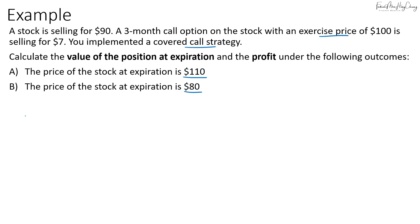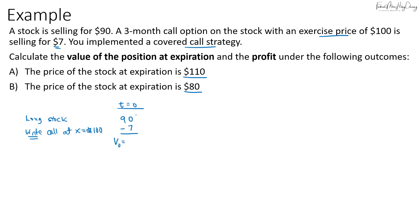Without using the formula, we'll implement the strategy directly. We long the stock and we write the call with an exercise price of $100. At time zero, the asset value of the stock is $90, and we write a call which is a liability, so the value of the call is minus $7. This gives us an initial value of the covered call position of $83.